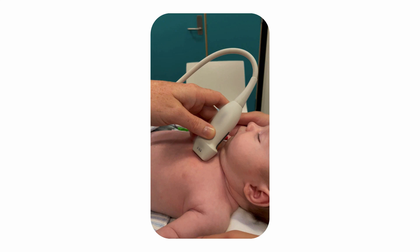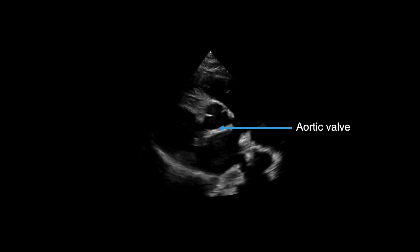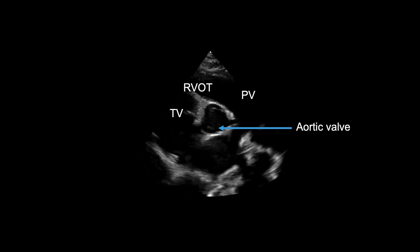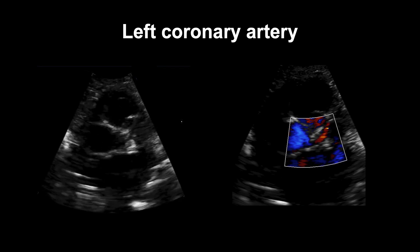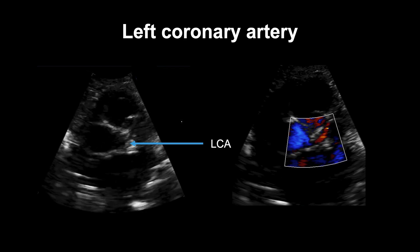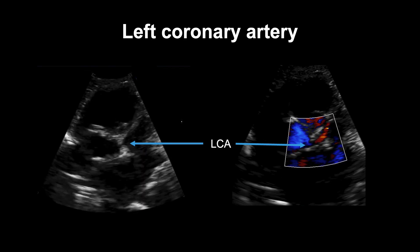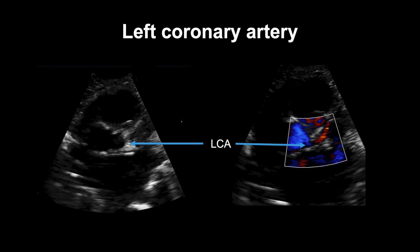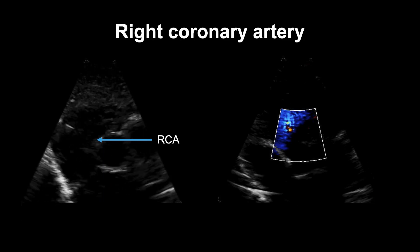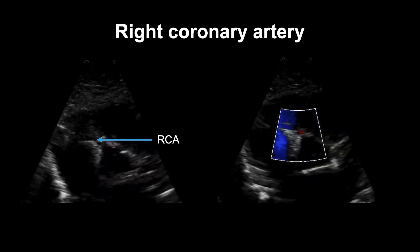This is a good view to assess for ventricular septal defects by sweeping the probe from the base to apex. The short axis or radial function of the left and right ventricles can also be assessed. The parasternal short axis view also allows for the coronary arteries to be visualised. The left coronary artery (LCA) is shown in 2D on the left, with colour flow within the proximal left coronary artery on the right. Similarly, the right coronary artery (RCA) is shown in 2D with colour flow in the proximal right coronary artery.